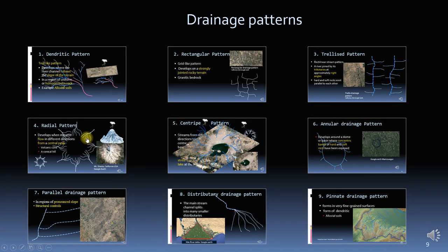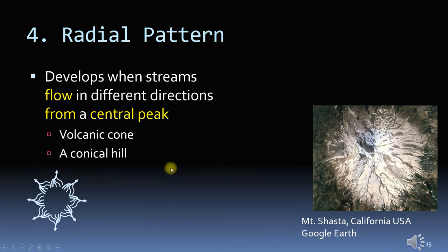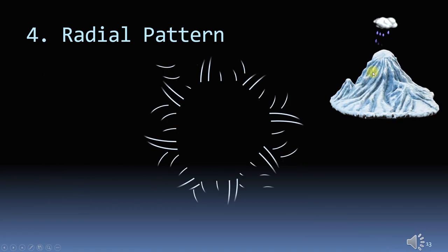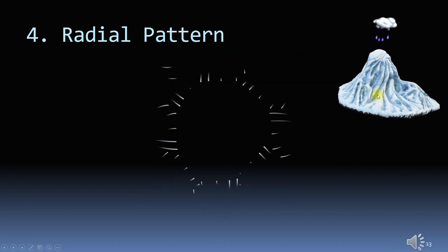The fourth pattern is the radial pattern. Water moves from a central peak to the sides. Examples are volcanic or conical hills. You can see various channels where water is moving from the center to the sides.